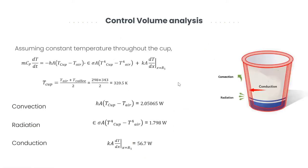Let's now dive deeper into the system. Analyzing the cup, we calculated the different terms of the energy equation and found that the convection term was contributing the most, that is around 56.7 watts, whereas the conduction and radiation terms comparatively had very low values.